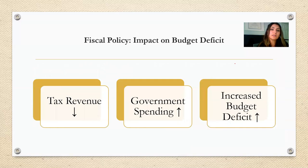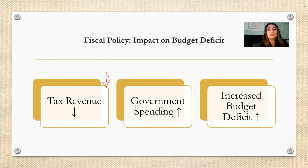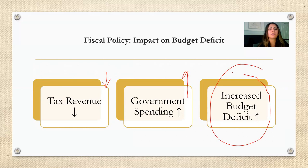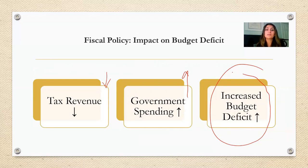Fiscal policy interventions to keep businesses and consumers afloat don't come without consequences. During recessions, tax revenues go down due to lower economic activity and government spending goes up due to efforts to put the economy back on track. As a result, we see upward pressure on the budget deficit. Government spending was increasing even before the COVID-19 crisis, and it is expected to further increase due to the fiscal policies adopted to fix pandemic-related problems. Economists projected that federal spending will outpace revenues by about $1 trillion this year.